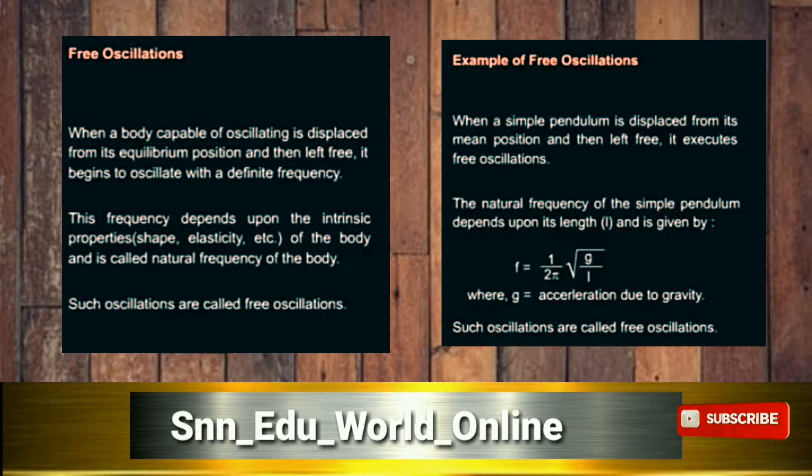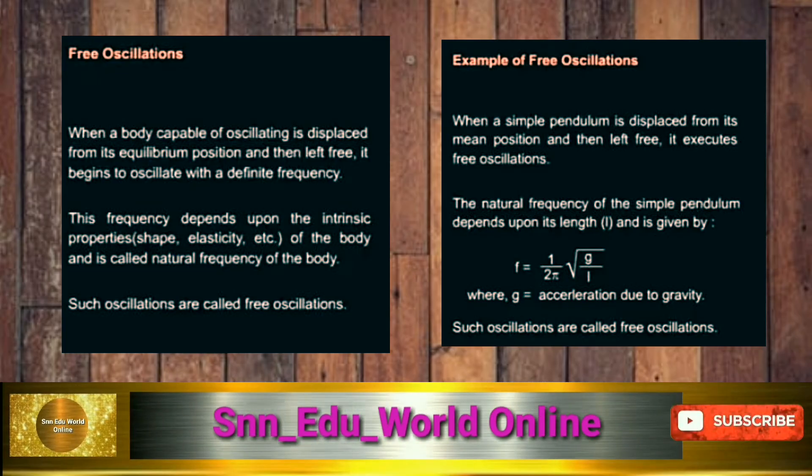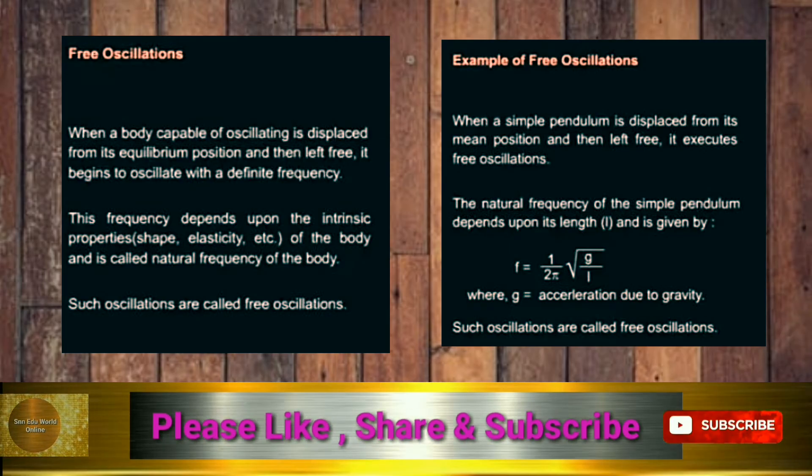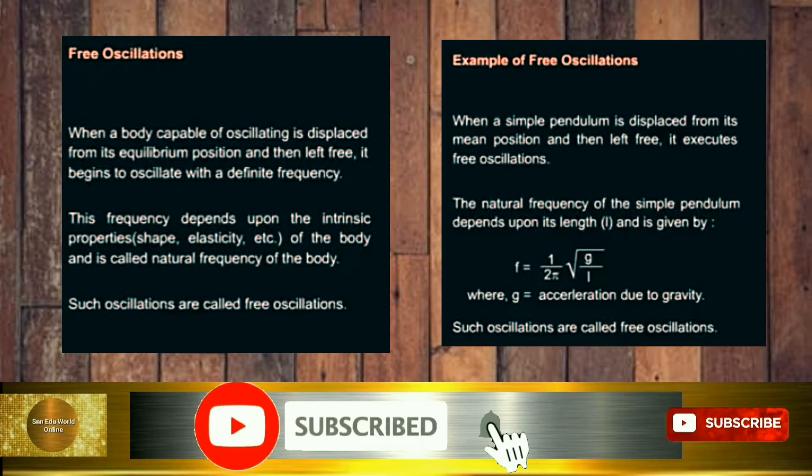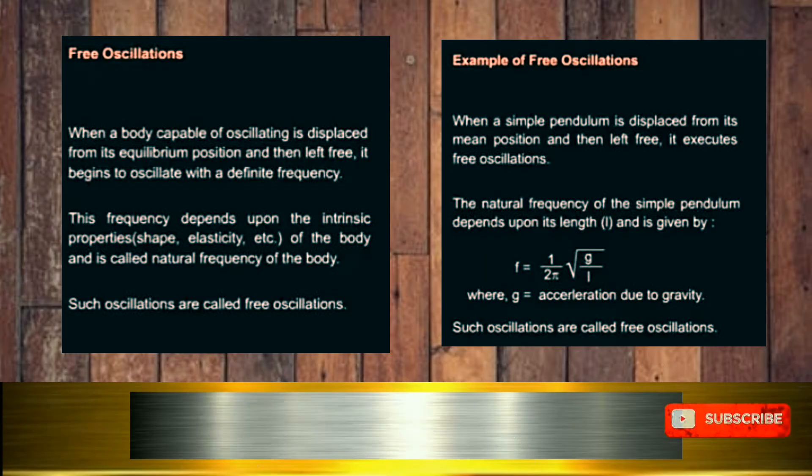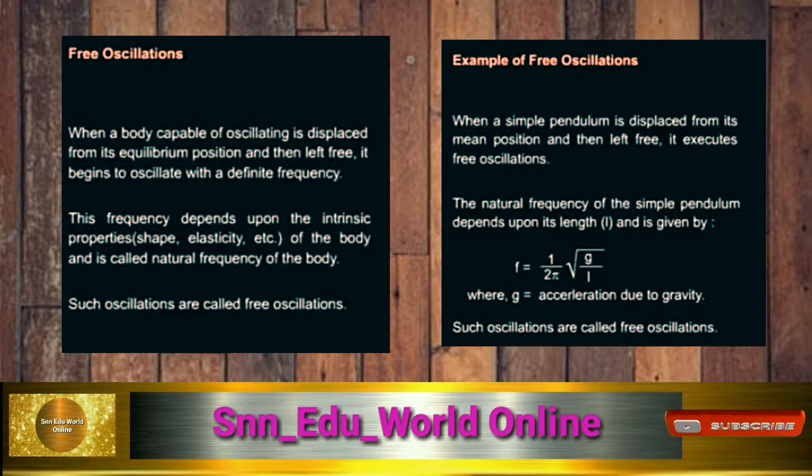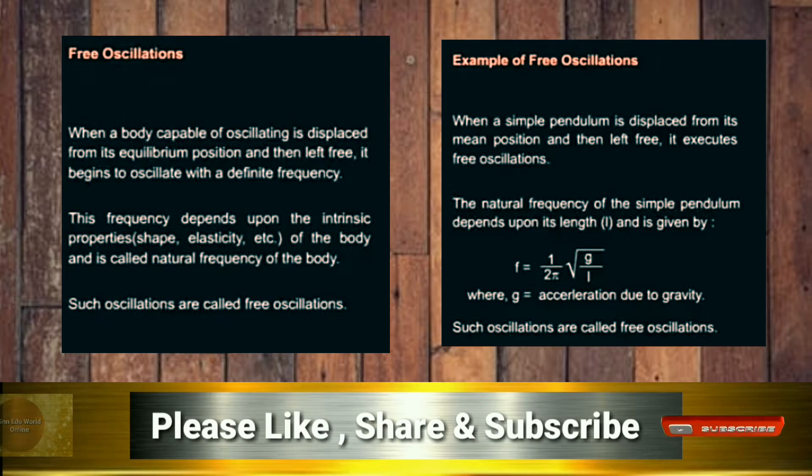The examples of free oscillations: when a simple pendulum is displaced from its mean position and then left free, it executes free oscillations. The natural frequency of the simple pendulum depends upon its length and is given by f = (1/2π)√(g/L). This we already discussed in simple pendulum. Here the oscillations of the simple pendulum are free oscillations.